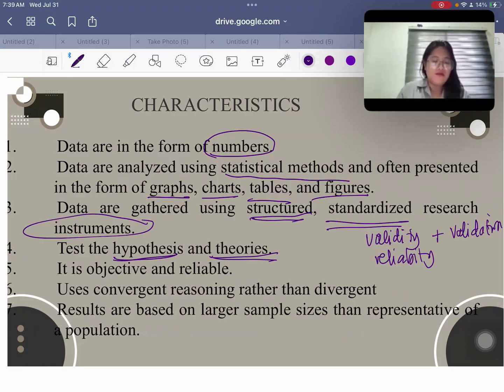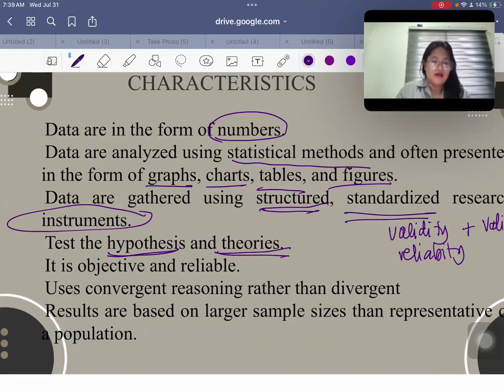So if you remember your statistics, there is the testing of the hypothesis process that you could do using the data that you have. So we will be applying this in our study with the help of statistics as well. For number five, we could also say that quantitative research is objective.